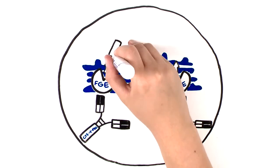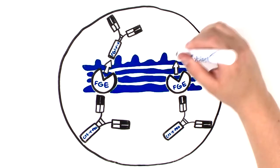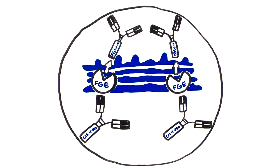Once bound, FGE enzymatically converts the cysteine to the natural amino acid formal glycine.